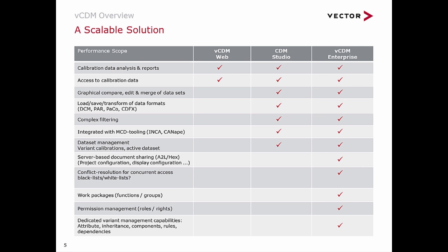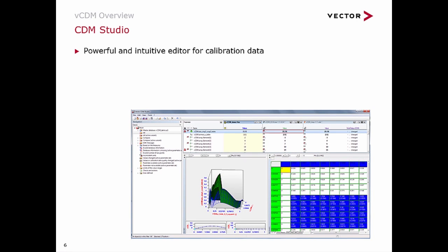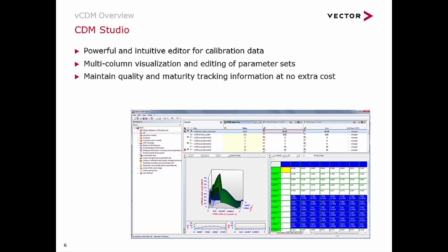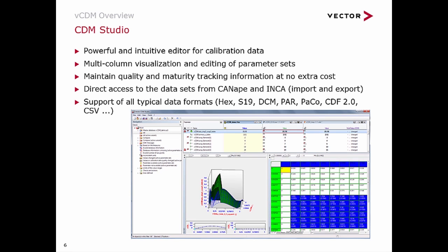The VCDM client application grants access to the central calibration data and is used to manage projects and calibration datasets. CDM Studio has a powerful and intuitive editor for all calibration data — almost like Microsoft Excel, but as a dedicated solution for automotive calibration data. It provides multi-column visualization for editing parameters and parameter datasets, helps maintain quality and maturity tracking information, and gives direct access to datasets from CANape and INCA. It supports all typical formats: HEX, S19, DCM, PAR, PACO, CDF, and CSV files.